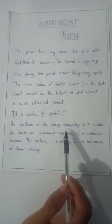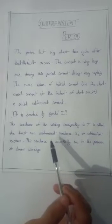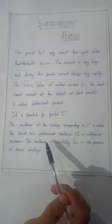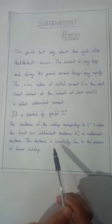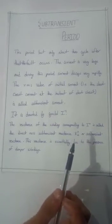The reactance of the winding corresponding to I double dash is called the direct axis Subtransient reactance XD double dash or Subtransient reactance. This reactance is essentially due to the presence of damper winding.